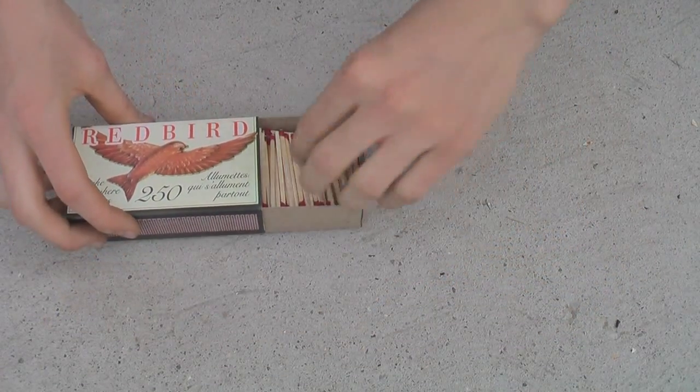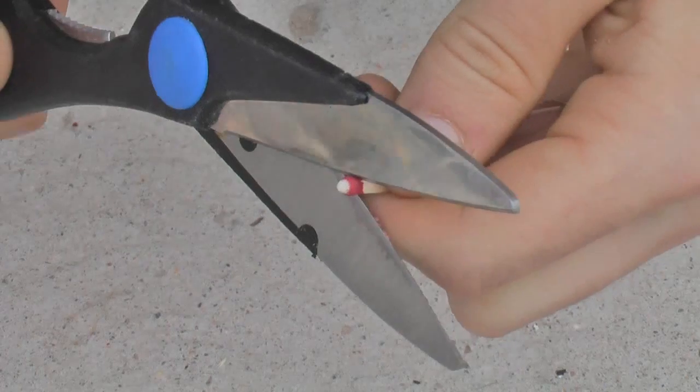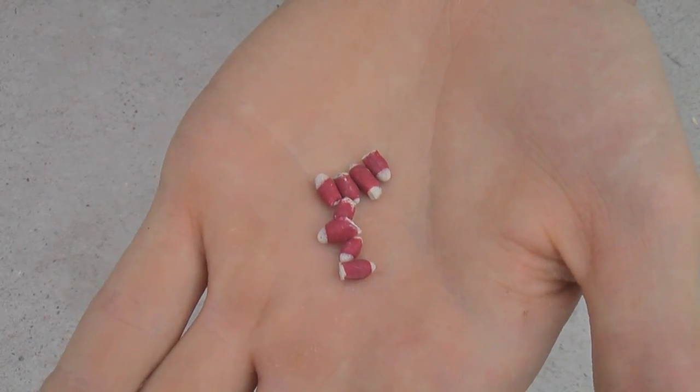Next, take your box of matches and count out about 8 matches. Now take all those matches and use your scissors to cut the heads off of them. When you're done, you should have about 8 match heads.